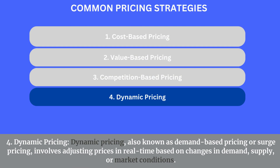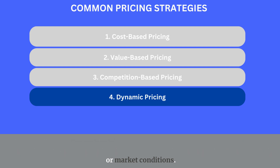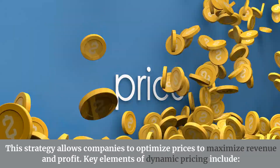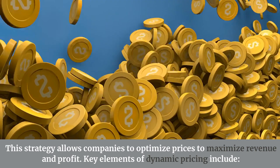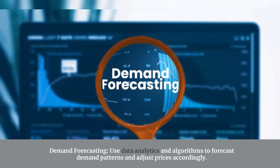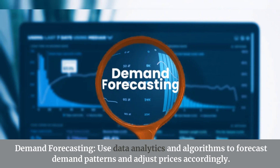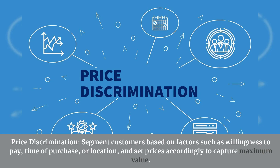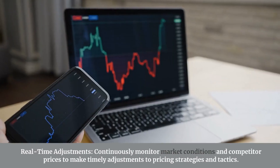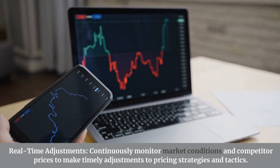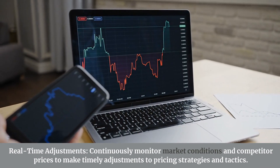4. Dynamic pricing, also known as demand-based or surge pricing, involves adjusting prices in real time based on changes in demand, supply, or market conditions, allowing companies to optimize prices to maximize revenue and profit. Key elements include: demand forecasting — using data analytics and algorithms to forecast demand patterns and adjust prices accordingly; price discrimination — segmenting customers based on willingness to pay, time of purchase, or location; and real-time adjustments — continuously monitoring market conditions and competitor prices to make timely adjustments.